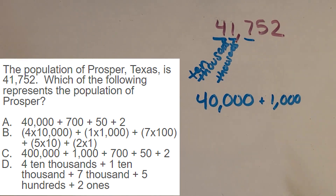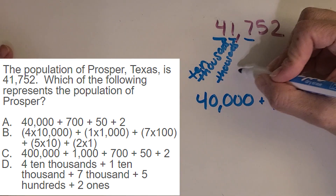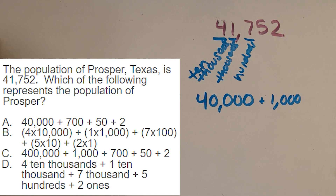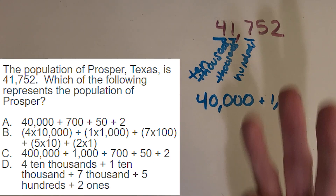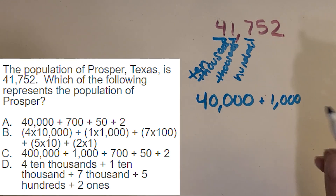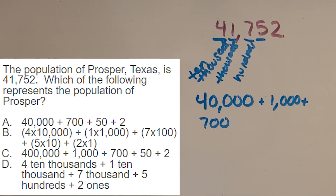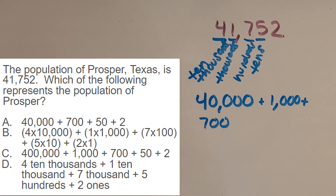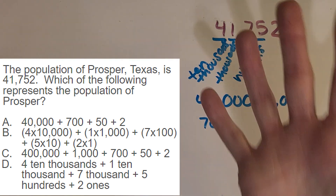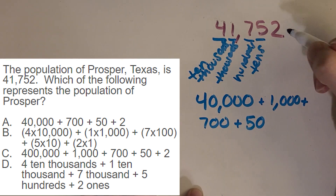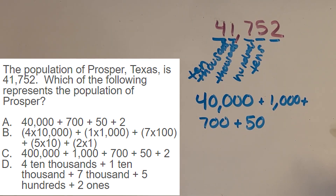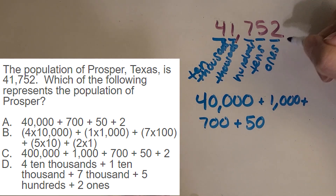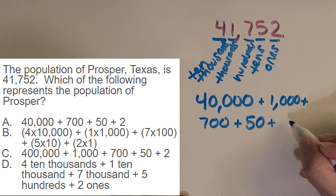What about the seven? It's in the hundreds place, and there are seven of them, so that's worth 700 — counting 100, 200, 300, all the way up to 700. Good job. Now let's do the five — it's in the tens place, and there are five of them, so that's worth 50: 10, 20, 30, 40, 50. And the last one is that two — it's in the ones place, and there are two of them, so it's worth just two.